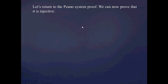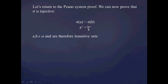So that theorem — that the union of A+ equals A when A is transitive — is what's going to allow us to complete our Peano system proof. We can now prove that the successor function sigma is injective by the following argument. Let's consider the possibility that sigma(a) = sigma(b). By the definition of sigma, a+ = b+. And we know that both a and b are in omega.